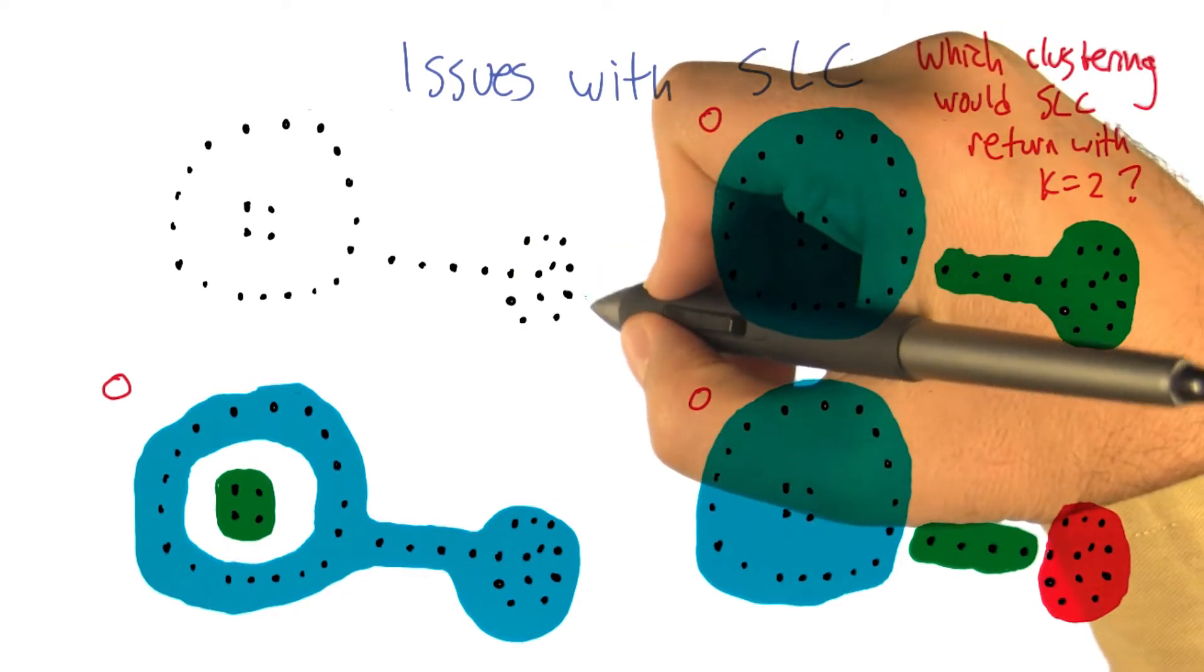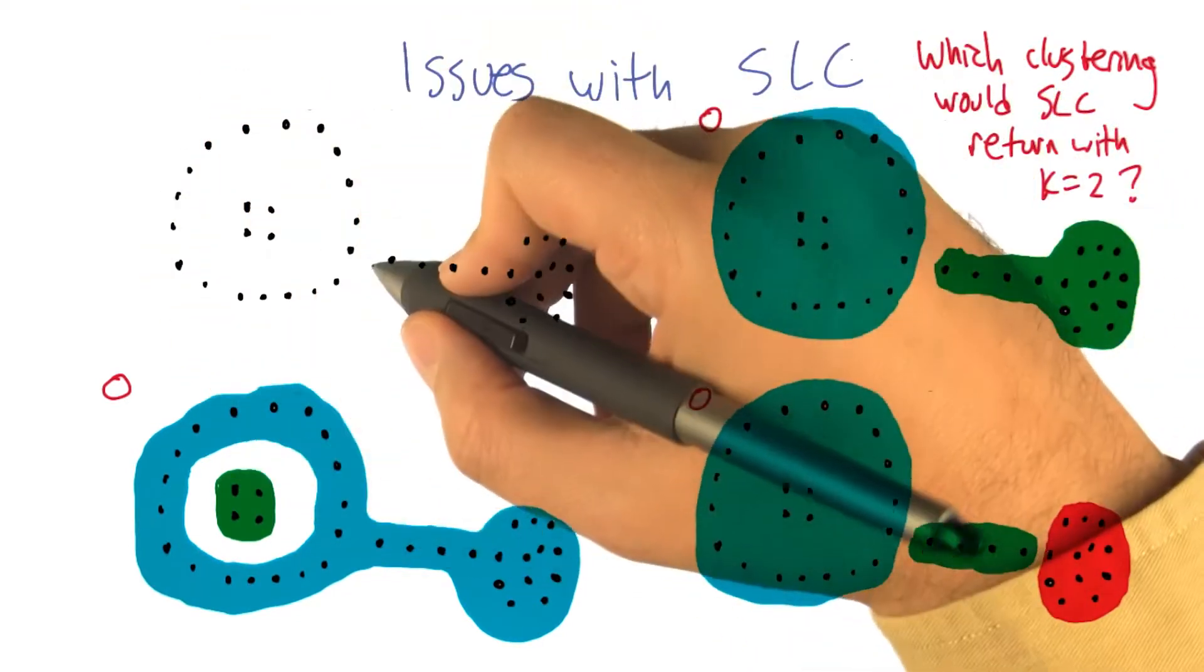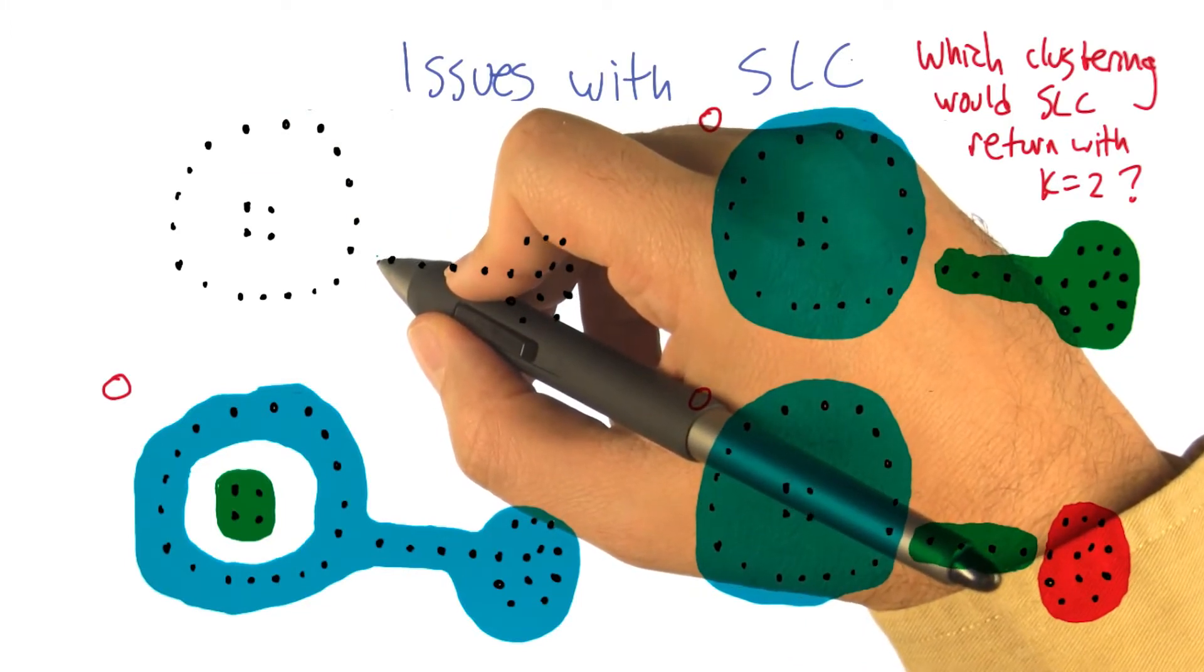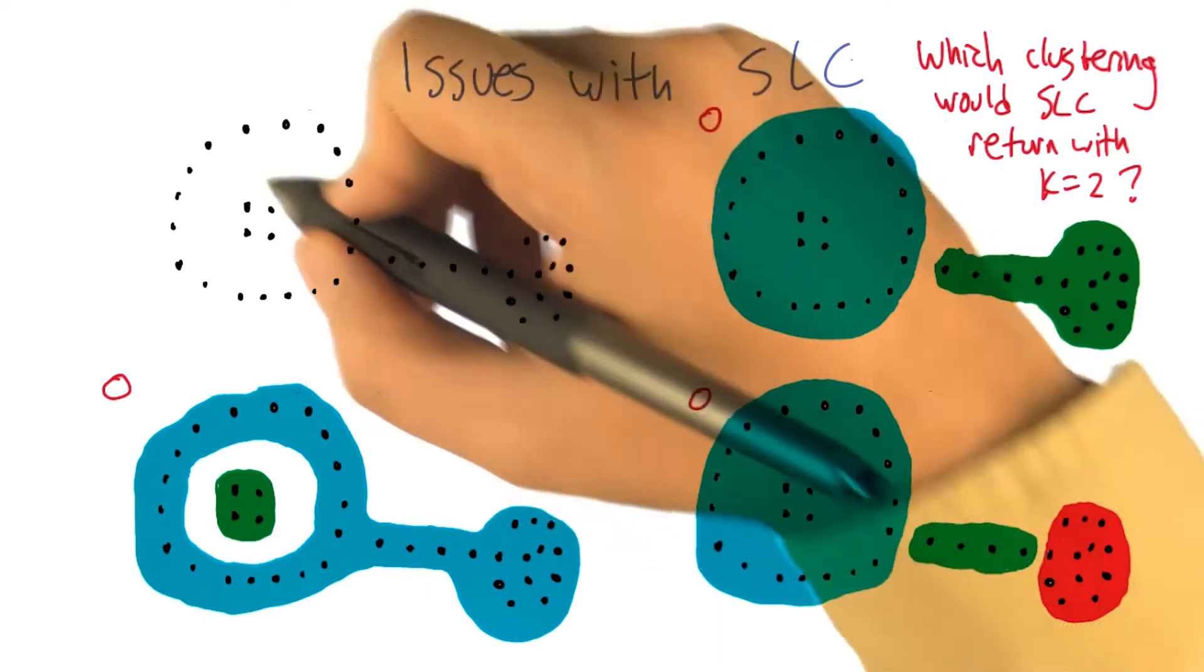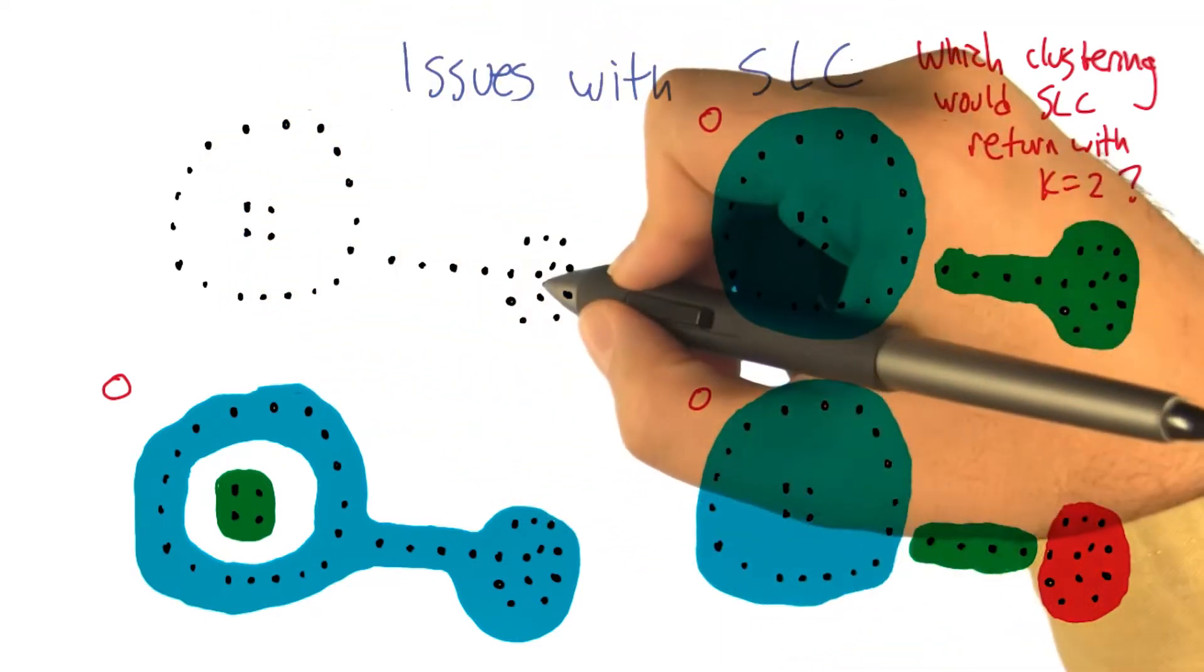And so, if I look at this, if you look at the big outer circle, you'll notice that you start with any one of those points and it's always going to be closer to one of its neighbors on the circle than to, say, those four points in the middle of the circle, right? They're close to each other.